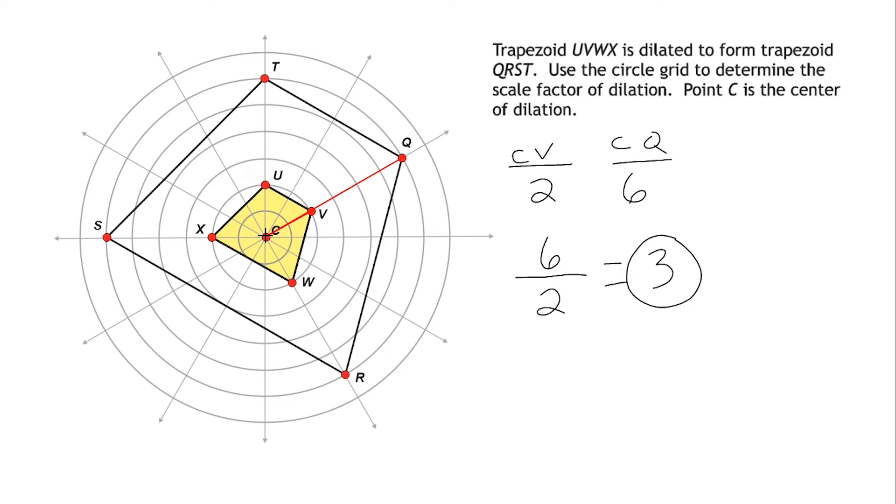So basically what we did is we started with a line segment that had a distance of 2, and what we did is we took that distance of 2, which is right here, and then we made it 3 times bigger by going from point C all the way to point Q. And if I were to compare those two distances side by side, we can see that it would take 3 of the smaller radius to make the larger radius, or 3 of the smaller line segment to make the larger line segment. And that's why the dilation increased by a scale factor of 3.